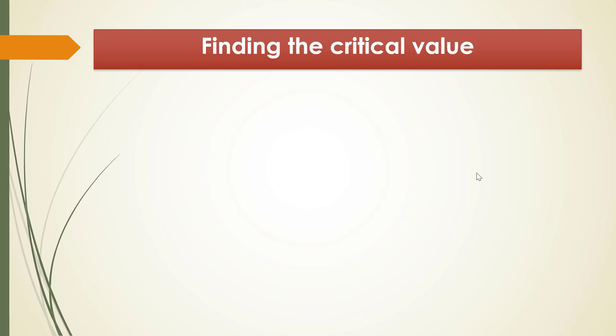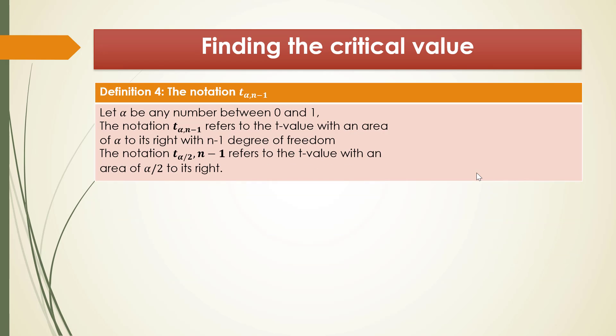Now let's learn how to find the critical value. Similar to the critical value in the normal distribution, we have a notation for the student t critical value. Let alpha be any number between 0 and 1. The notation t_{α, n-1} refers to the t value with an area of alpha to its right with n minus 1 degrees of freedom. The notation t_{α/2, n-1} refers to the t value with an area of alpha over 2 to its right. To construct a 1 minus alpha confidence interval, the critical values are t_{α/2} and minus t_{α/2}, as shown in the figure.